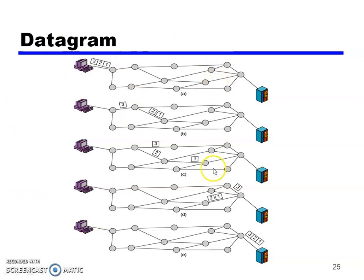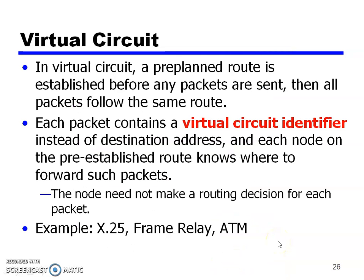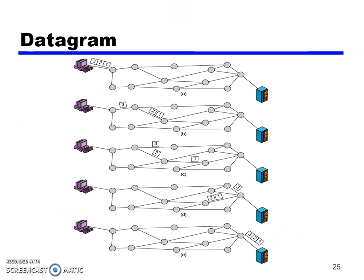In the datagram switching process, suppose the sender machine sends data divided into 3 packets. Packets 1 and 2 may take different routes through the network. Some packets may be reordered or arrive out of sequence at the receiver machine. The receiver then reassembles all packets into the original data. This is the process of datagram switching.